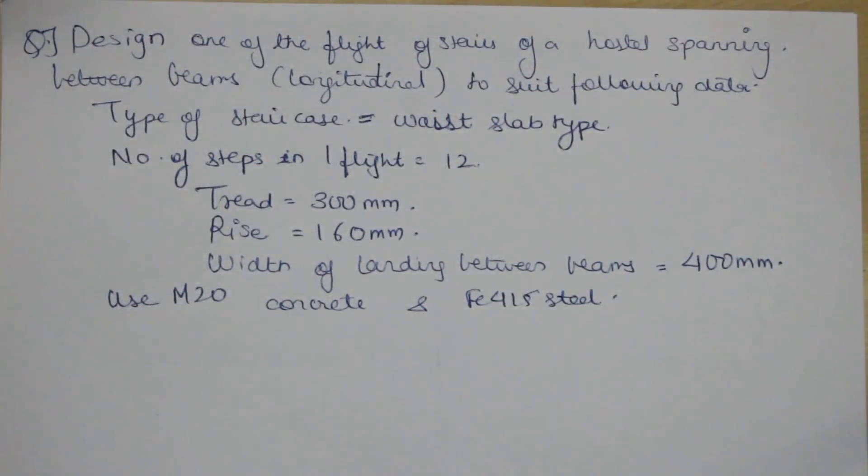This is a problem on design of staircase. The problem given is to design one of the flights of a stair of a hostel spanning between beams longitudinally to suit the following data: type of staircase is a waste slab type, number of steps in one flight is 12, tread is 300 mm, rise is 160 mm, and the width of landing between the beams is 4000 mm. The concrete grade is M20 and grade of steel is Fe415.